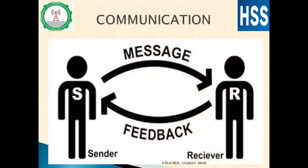The simplest possible layout of any communication can be like this: in the communication process there will be a sender S and a receiver R, and there will be a message. That message will be sent by the sender to the receiver via any medium or channel, and then the required feedback from the receiver to the sender completes the cycle of communication.